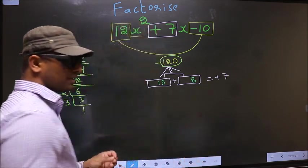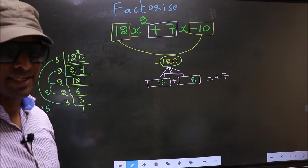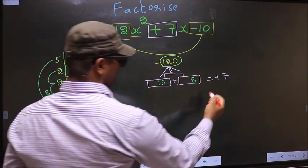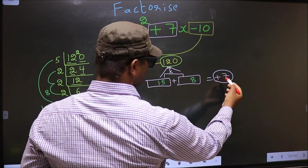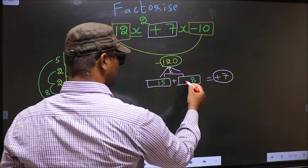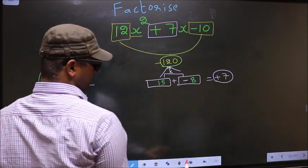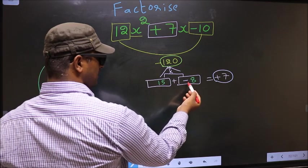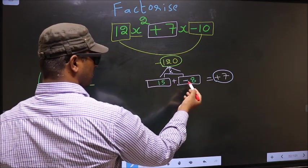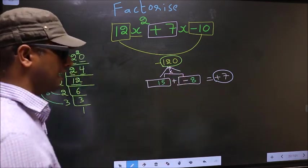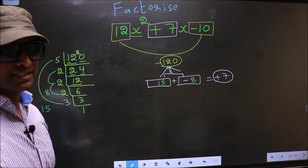Now we should adjust the signs. Over here we should get plus 7. To get plus 7, we should put negative here. 15 minus 8 is plus 7, and 15 into minus 8 is minus 120. So we have adjusted the signs.